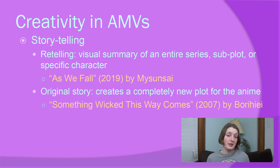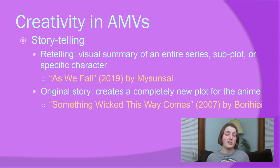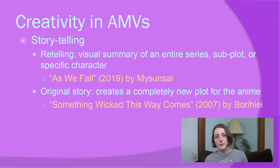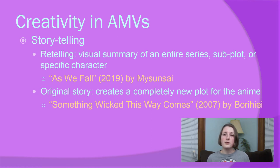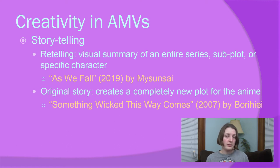Some AMVs kind of tell a story within them. It could be that they're showing you the actual story of the anime their source footage is from, or they could be creating a new story from scratch. For example, the AMV As We Fall uses footage from the movie Patema Inverted, and if you watch it you'll get a good sense of what that movie is about. On the other hand, Something Wicked This Way Comes uses footage from Totoro to create an entirely new story — most of you know Totoro is a cute children's anime, but this AMV retells it as if it were a sinister horror story.